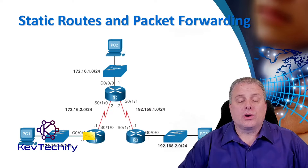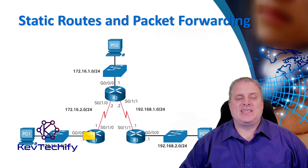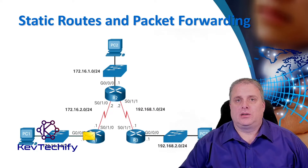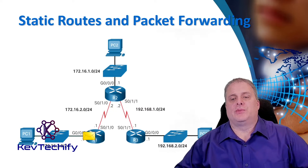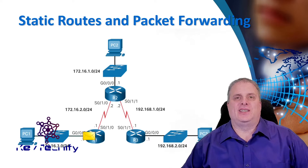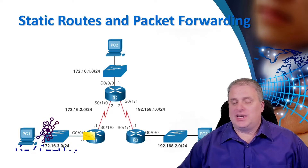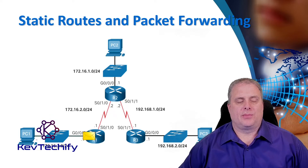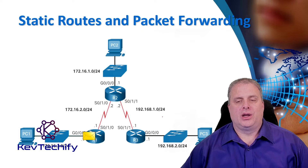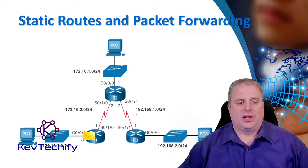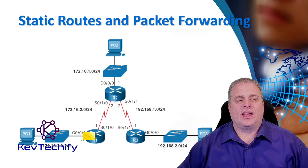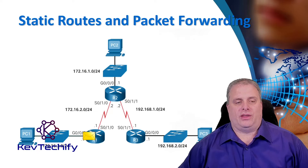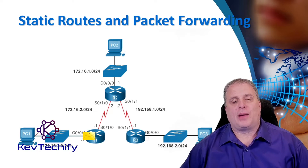We're going to work through an example here. PC1 is going to send some information to PC3. PC1 addresses the packet to PC3. Once it's addressed, it then forwards it to the default gateway. That's the next hop in there.